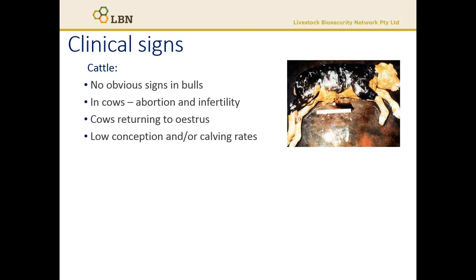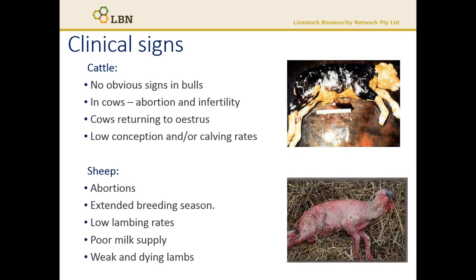Ovine Campylobacteria, also known as ovine vibriosis or epidemic abortion of sheep, causes epidemics of abortions — a very apt name. Susceptible ewes generally come into contact with the Campylobacteria in contaminated food or water. The bacteria enters the bloodstream and then passes to the uterus, where they may multiply and infect the placental membrane. Abortion then occurs one to three weeks after the infection. Infected ewes that go on to deliver full-term lambs may have a poor milk supply, which further contributes to weak lambs and an increase in perinatal death.